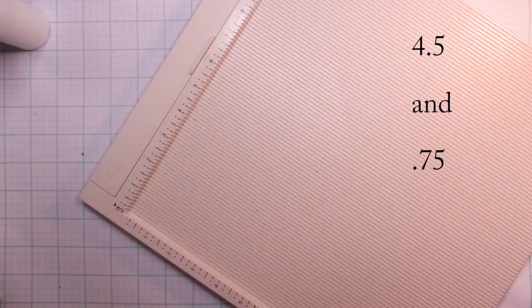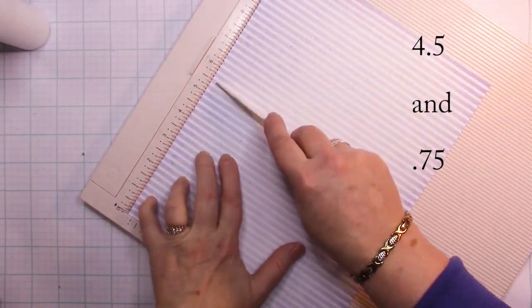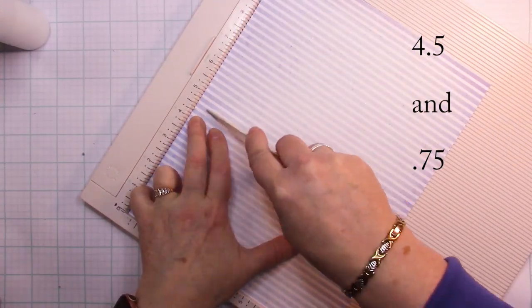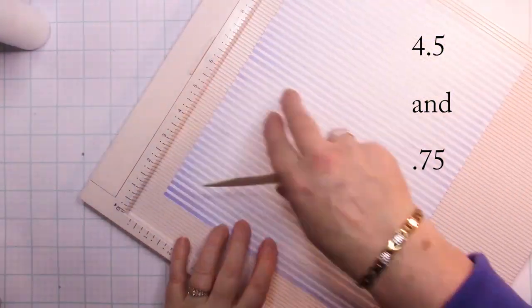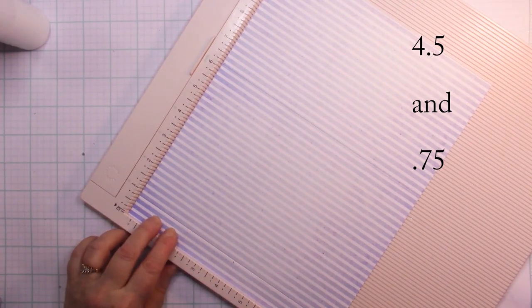One is at four and a half inches, and then you turn it around and do it at three quarters of an inch. So right there, turn it around and then make your marking at three quarters of an inch.